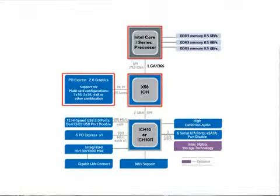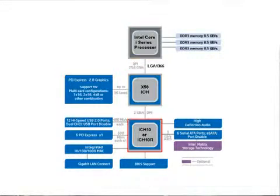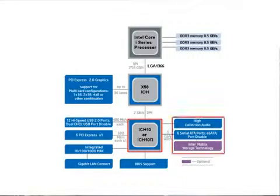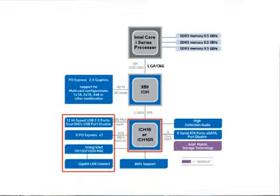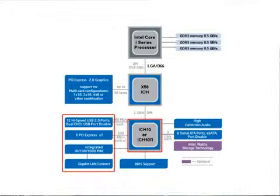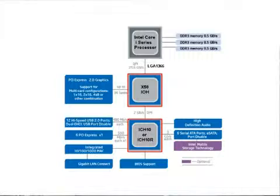We still have an intermediary with video. The Southbridge component in motherboards has been pretty steady in its functions for many years. We have connections to things like audio, hard disk, serial ATA or parallel ATA connections, USB — this particular chipset supports 12 USB ports — PCI Express bus slots for cards other than video, Ethernet controllers, and the motherboard ROM. All of those devices are connected directly to the Southbridge, and data has to travel from the Southbridge to the Northbridge and from the Northbridge to the processor.